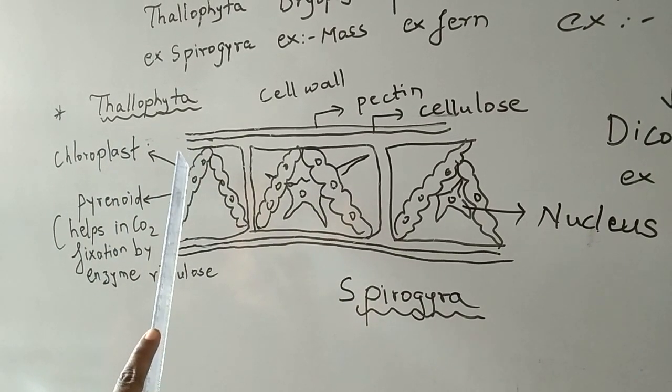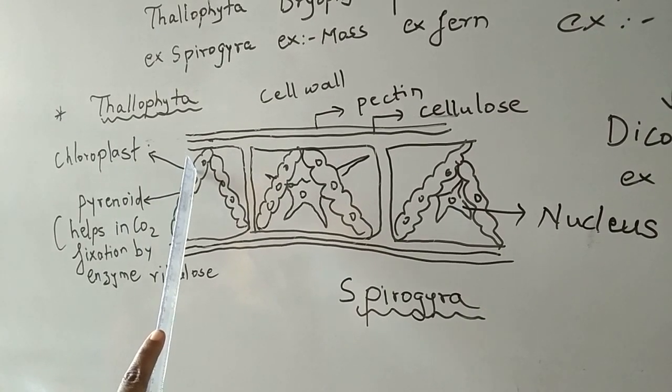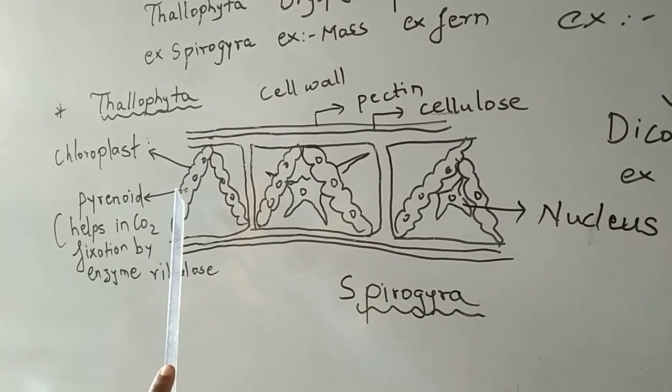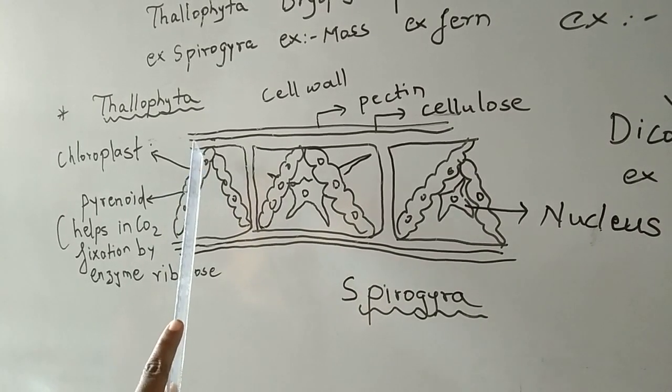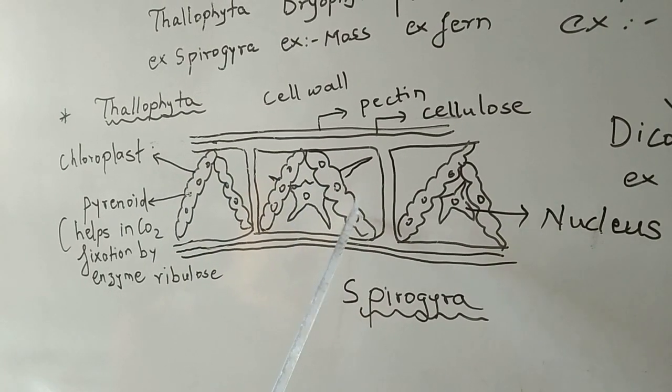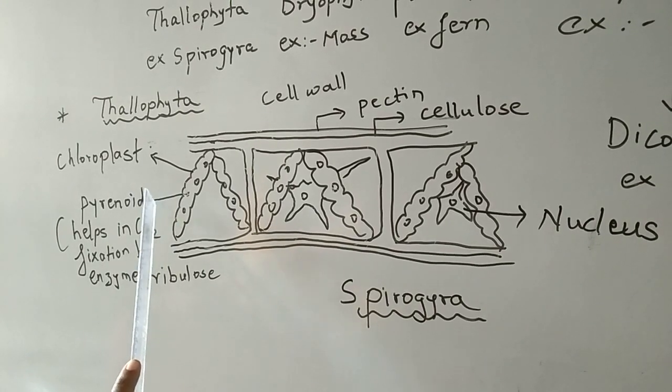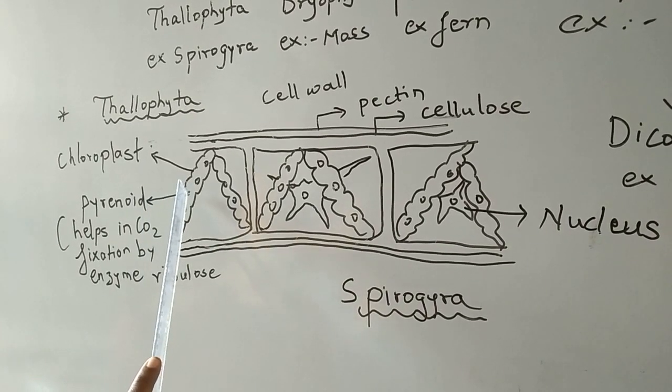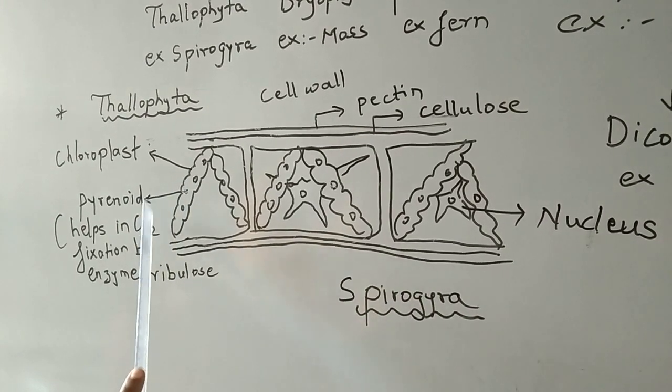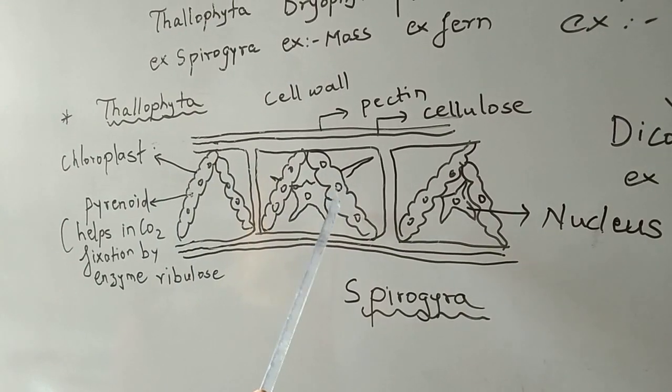Inside the chloroplast, you can see round-shaped structures. These round-shaped structures are called pyrenoids. What is the role of pyrenoid? Pyrenoid contains enzyme ribulose which helps in carbon dioxide fixation. Ribulose is found to be present in all types of pyrenoids.